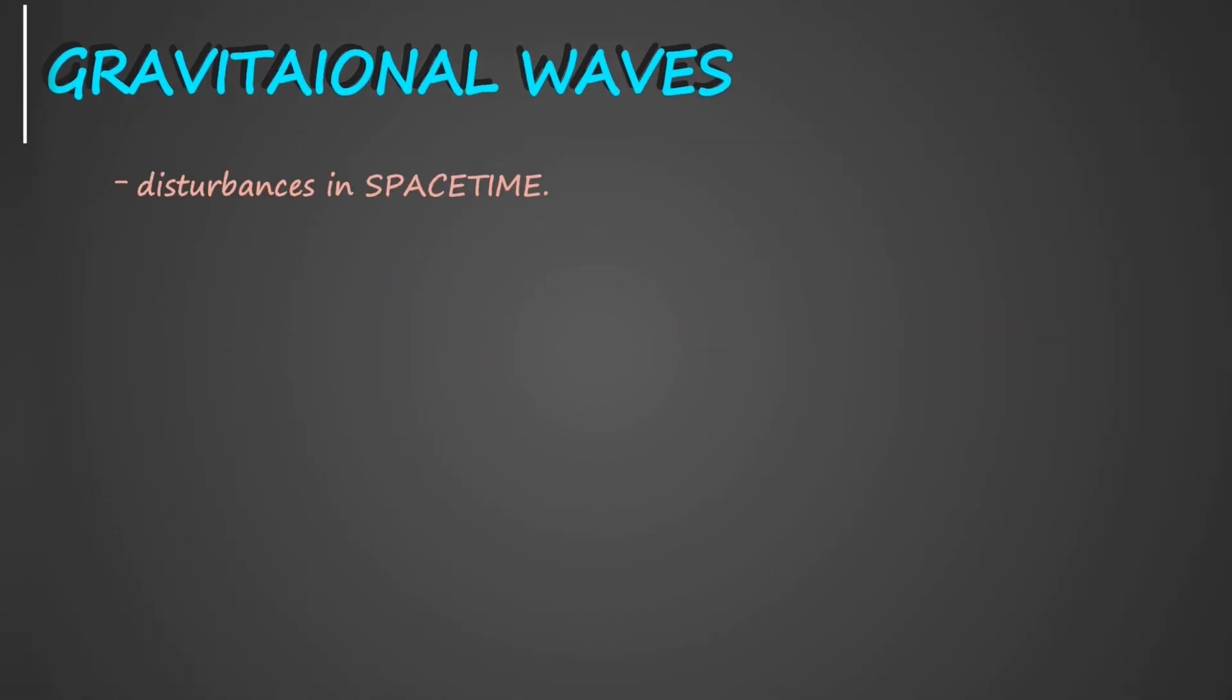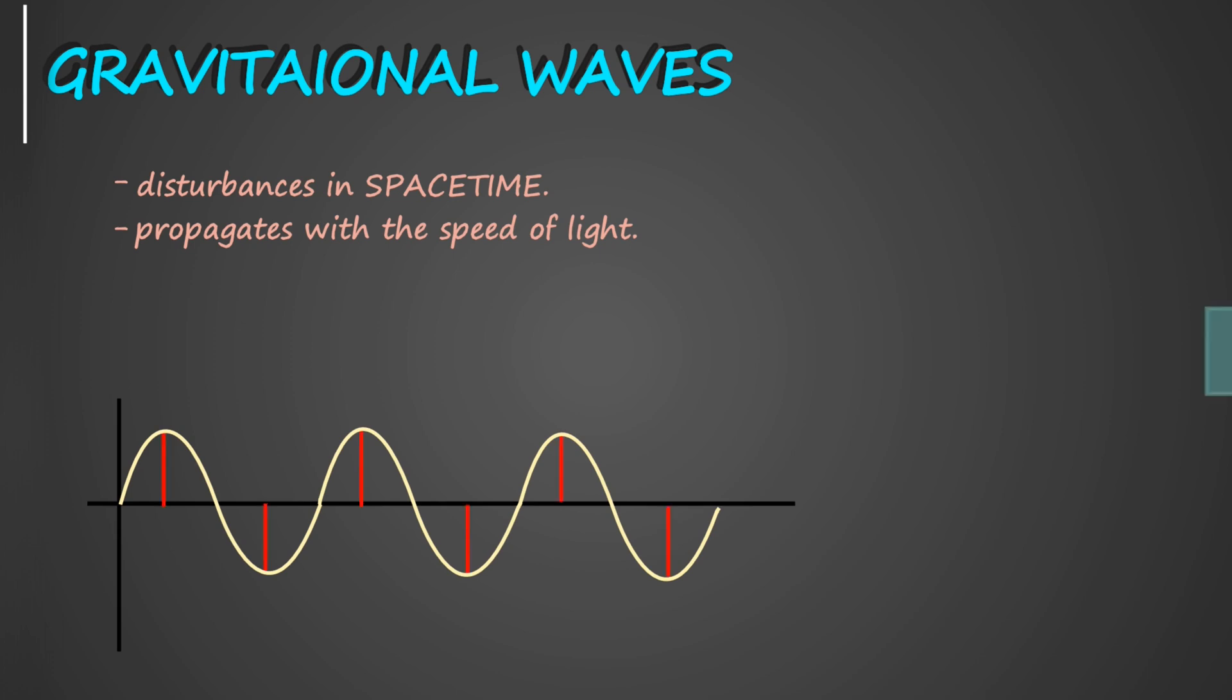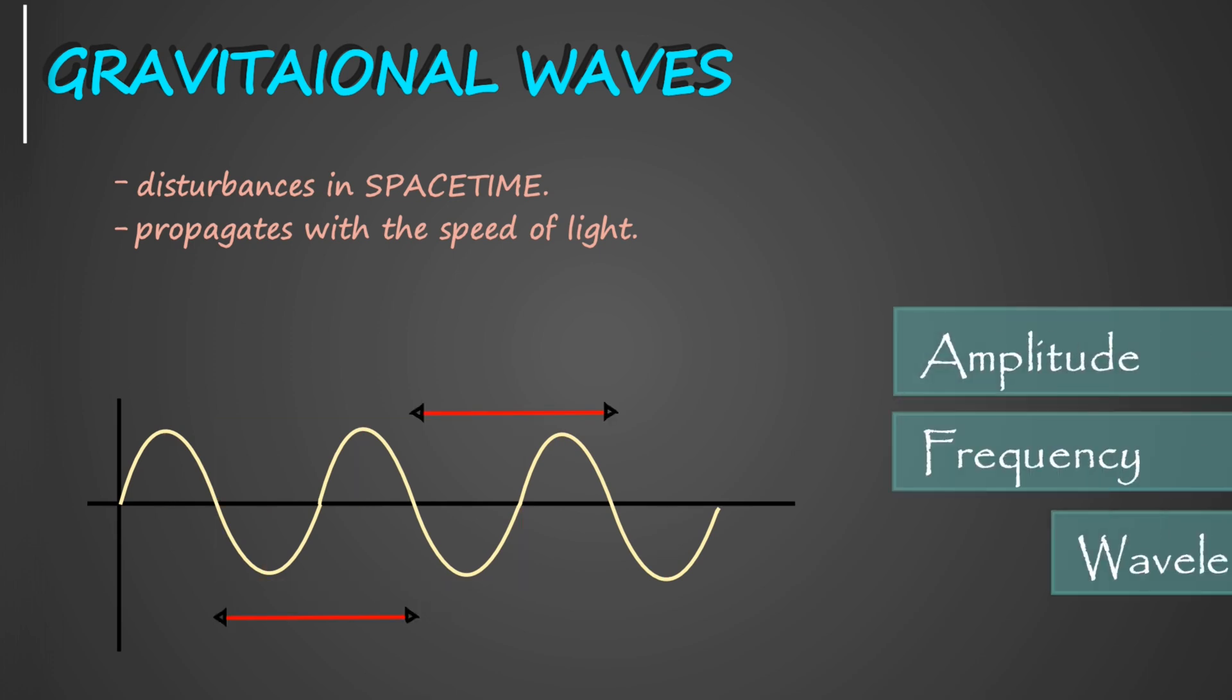Gravitational waves are disturbances in space-time that propagate at the speed of light. And like all other waves, they have amplitude, frequency, wavelength, and polarization.